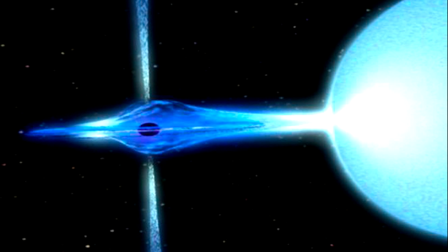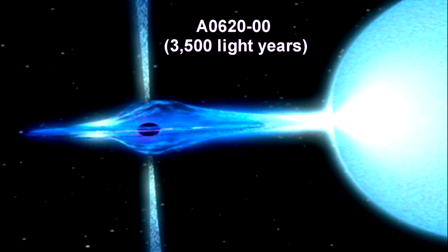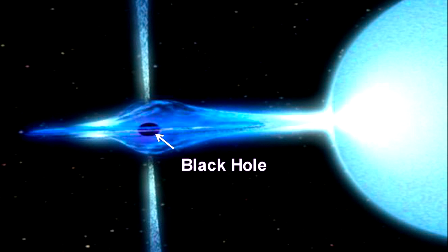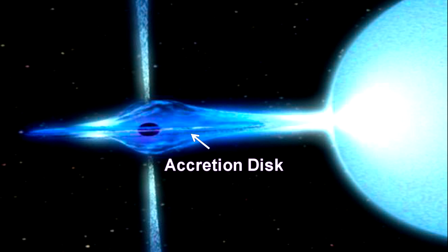Our Milky Way galaxy contains several stellar-mass black hole candidates closer to us than the supermassive black hole at the galactic center. One is a low-mass X-ray binary star system containing a large, dark, compact stellar structure between three to five times the mass of the Sun, with a diameter of around 25 miles. We calculate this by measuring the motion of gas in the accretion disk and studying the X-ray emission profiles. At a distance of around 3,500 light-years, this is the nearest black hole to Earth.